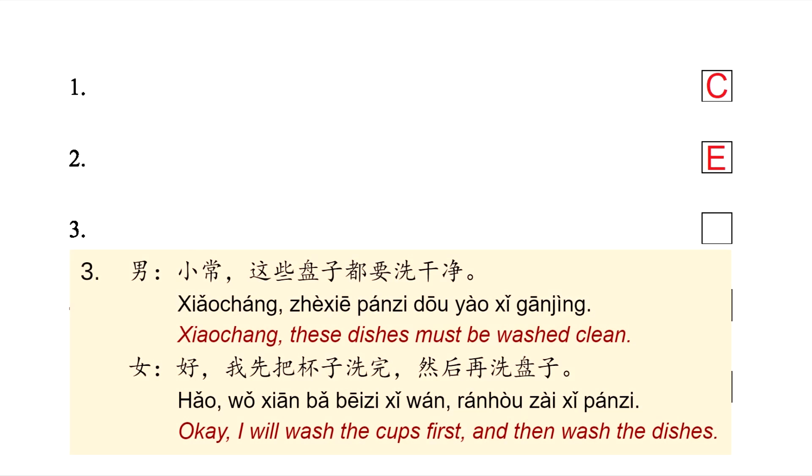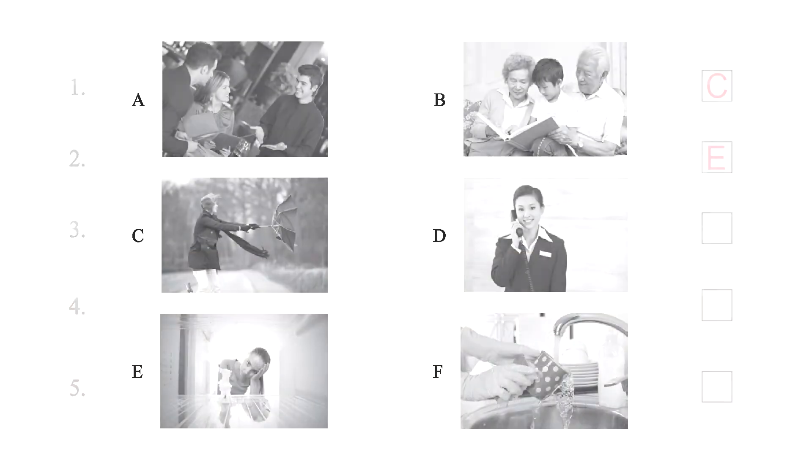In this dialogue, we hear a man saying 小肠，这些盘子都要洗干净. 小肠, this is a Chinese name, these dishes must be washed clean. The woman says 好，我先把杯子洗完，然后再洗盘子. OK, I will wash the cups first, then wash the dishes. In picture letter F, we have somebody washing a cup, so this is the correct answer.